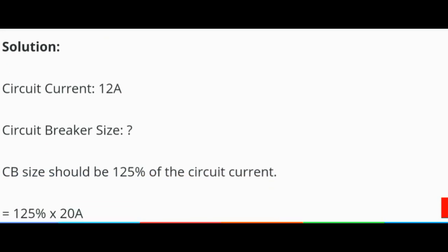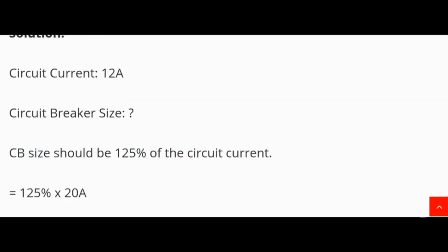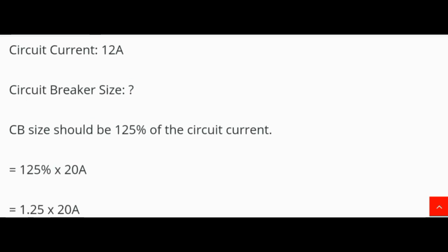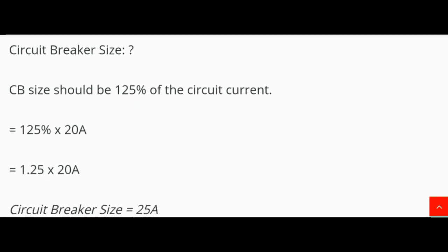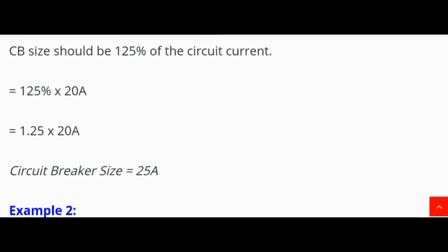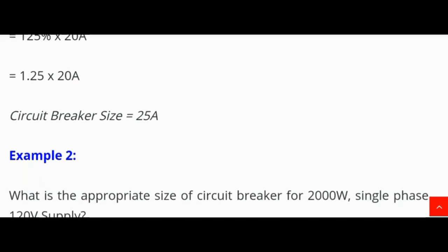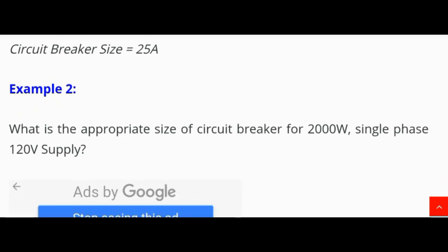Solution: Circuit breaker size should be 125 percent of the circuit current. So: CB size = 1.25 × 20 A = 25 A. However, the circuit breaker size in this case is 20 ampere (using the standard available size closest to the load).